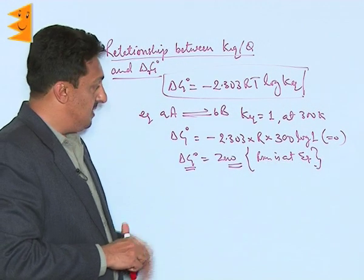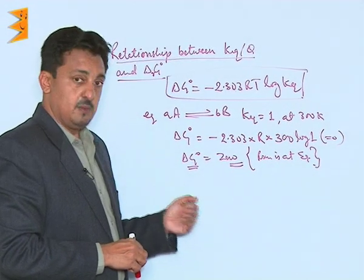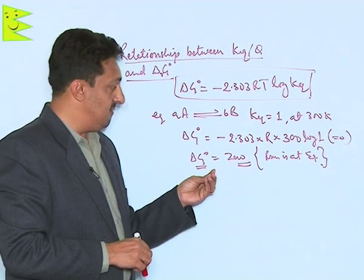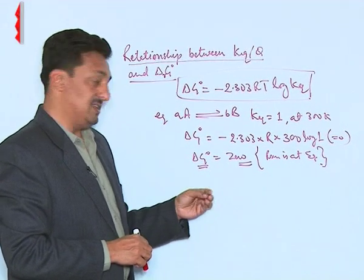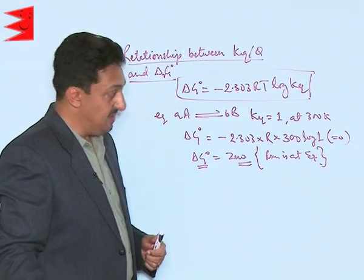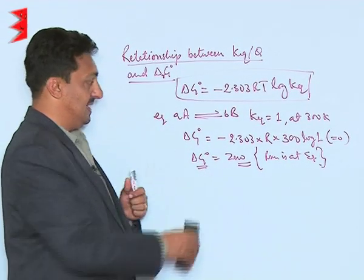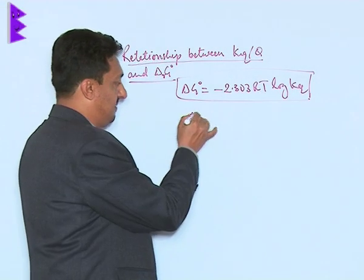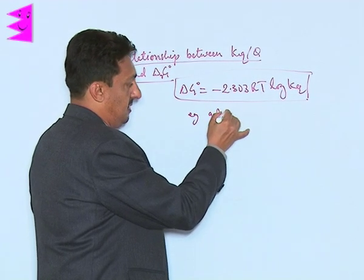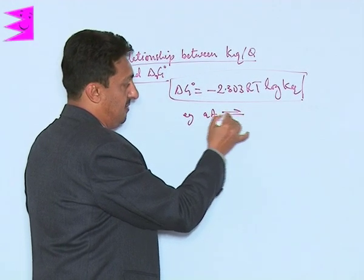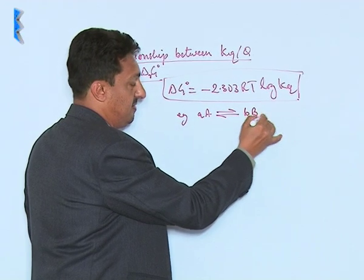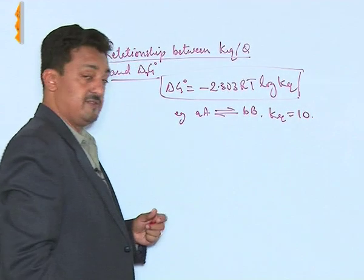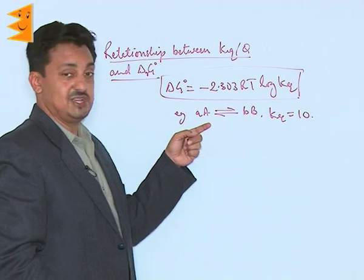When the standard free energy value is 0, it means the reaction is at equilibrium. We can easily predict where the reaction stands and whether it will be spontaneous or not. Let us take another example in which A moles of A changes to B moles of B, and suppose the value of the equilibrium constant is 10.